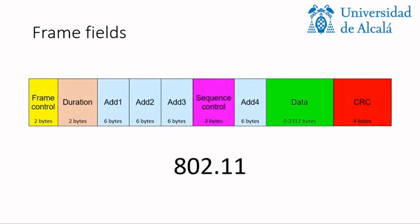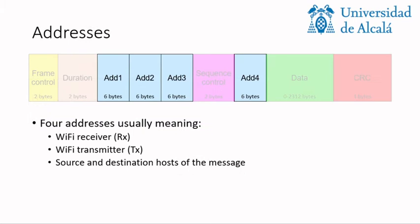As you remember, the frame format has four fields for the addresses, and this is quite strange because in the Ethernet frame, we just have two — the destination and the source address. So why do we have four?